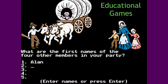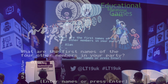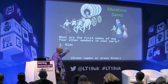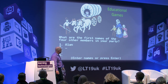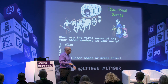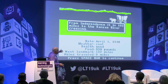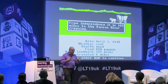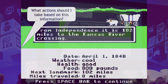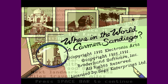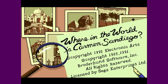Oregon Trail was one of the most popular educational games in the United States of all time — mostly because of the awesome graphics. You could die of dysentery, you could die of attack. It gave you information and was a story combined with a little bit of action and interactivity. You thought about things like: what action should I take based on this information?